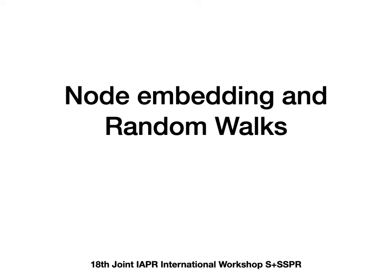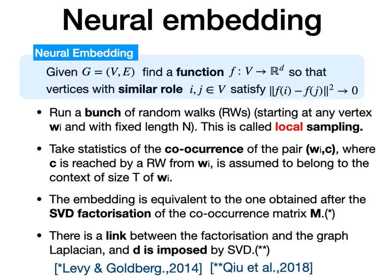The idea is to embed the graphs. We cannot use spectral embeddings, so we resort to embeddings typically obtained from bunches of random walks. We have a population of random walks, we take statistics of the co-occurrences of pairs of nodes given a context size T. This is what is done in the state of the art: the embedding is just the SVD factorization of what they call the co-occurrence matrix. This was proposed recently by Levy and Goldberg and summarized by Qiu et al.